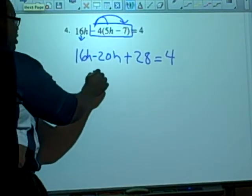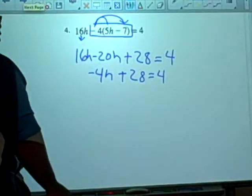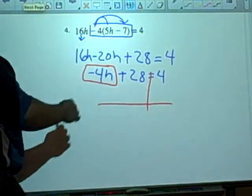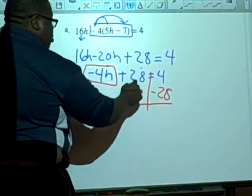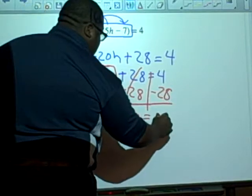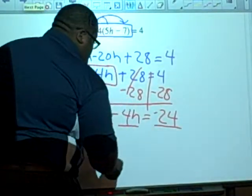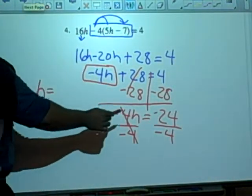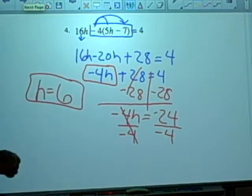16H minus 20H is negative four. Negative four H plus 28 equals four. At this point, I can box my variable, box everything and the sign. I'm going to draw this just to separate my sides. I'm going to take the opposite of plus 28, which is minus 28. These cross out and I have negative four H equals four minus 28, which is negative 24. My last step asks me to divide on both sides by the coefficient, which is negative four. These cancel and H equals negative 24 divided by negative four is positive six.